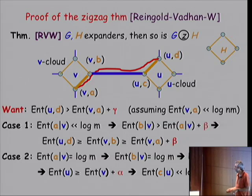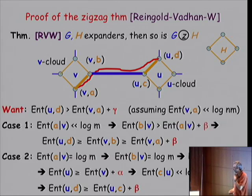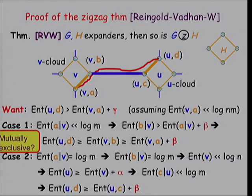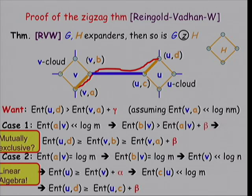And that's almost a proof. The remaining issue is why these two cases cover everything — I talked about one vertex, but we should consider all vertices V. Are they mutually exclusive? When you move to the linear algebra setting, you have vectors which you can partition into those orthogonal to uniform on every cloud, and those parallel to uniform on every cloud. They are mutually exclusive, and it just works. That's the idea of the proof.